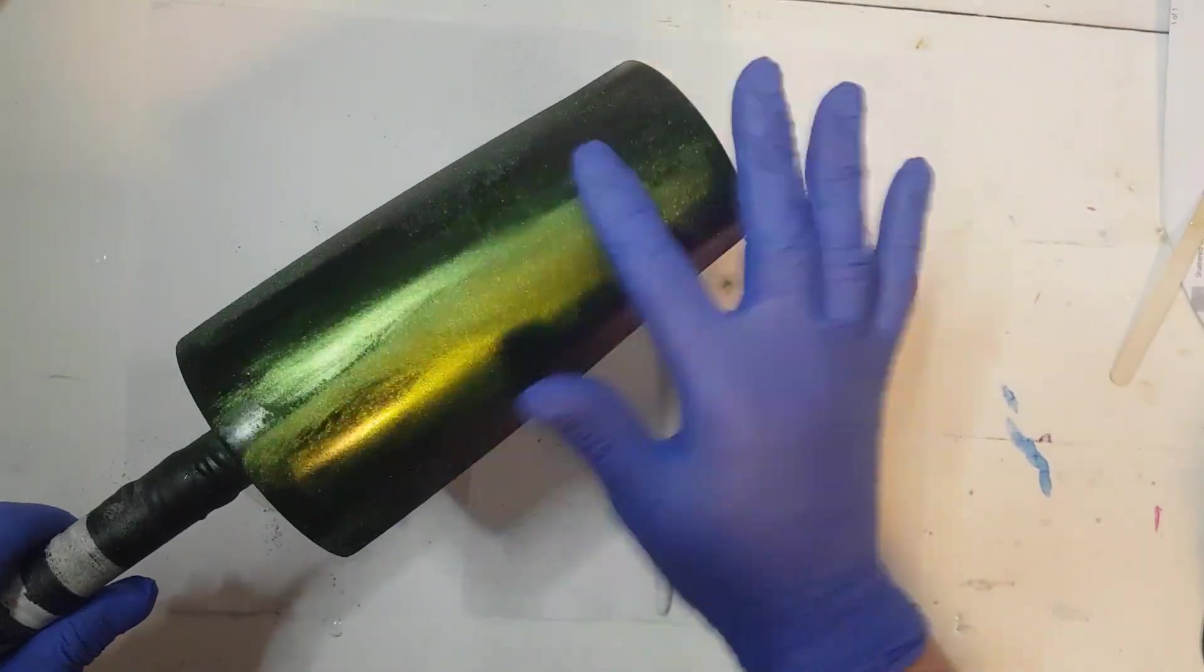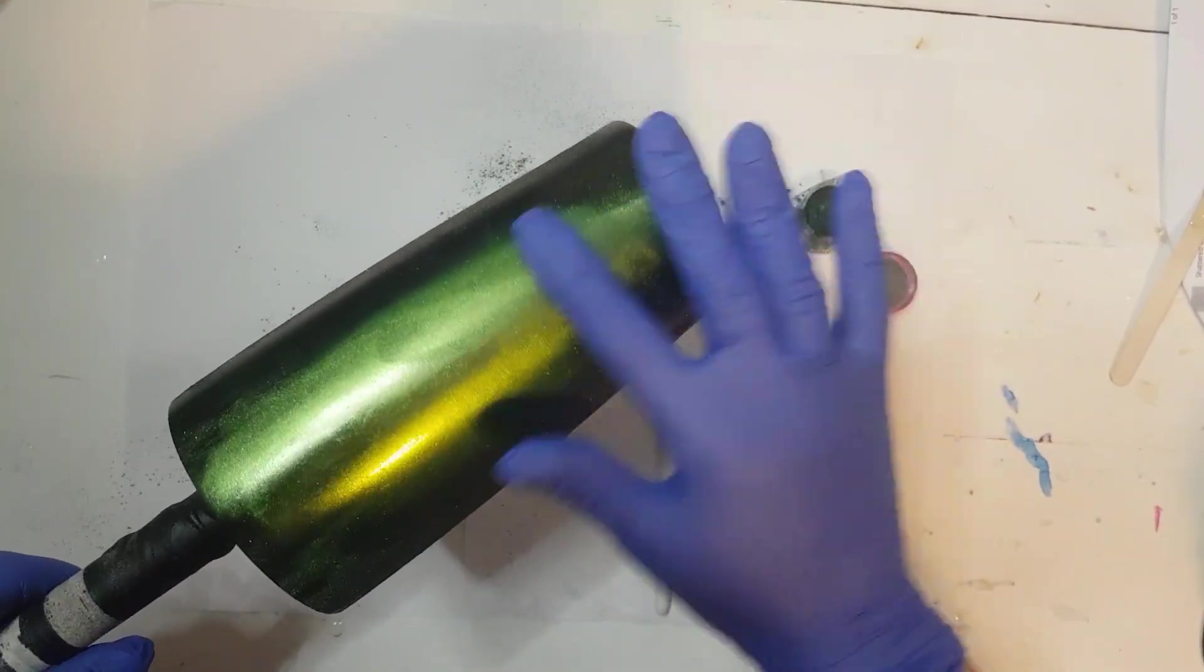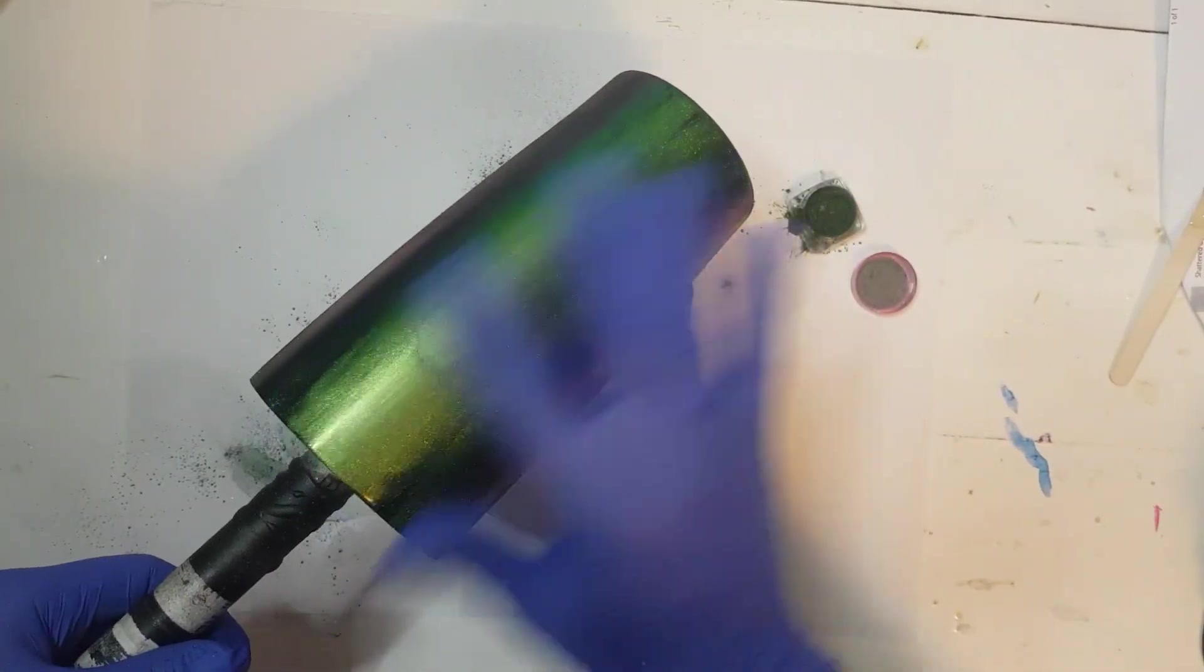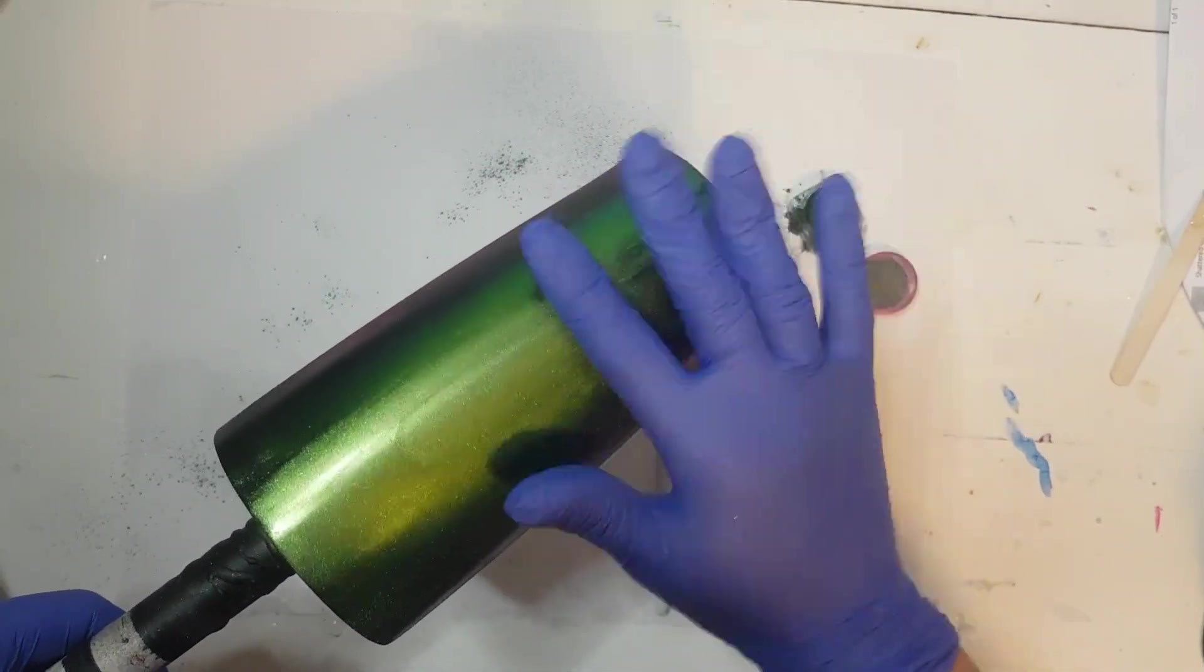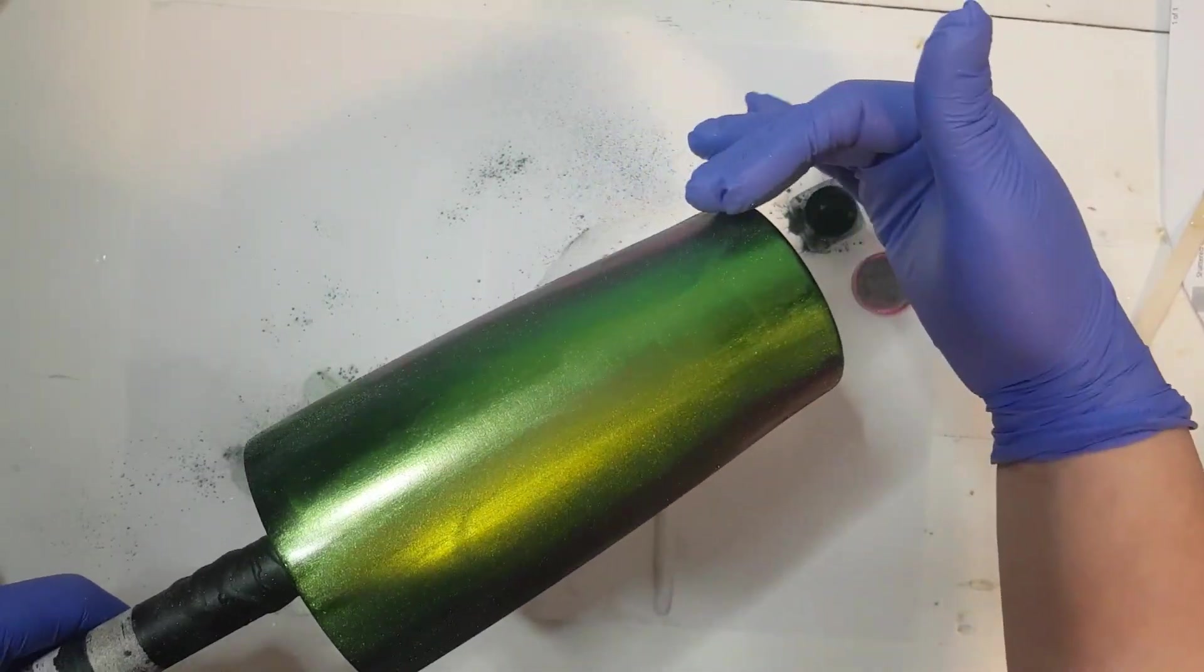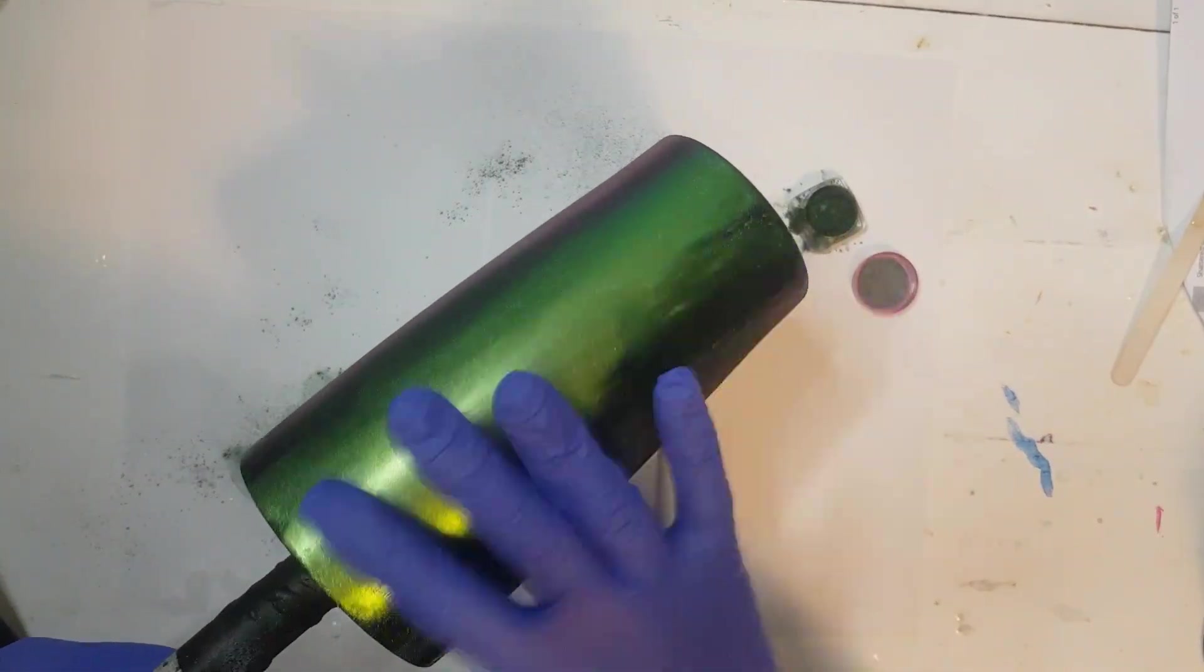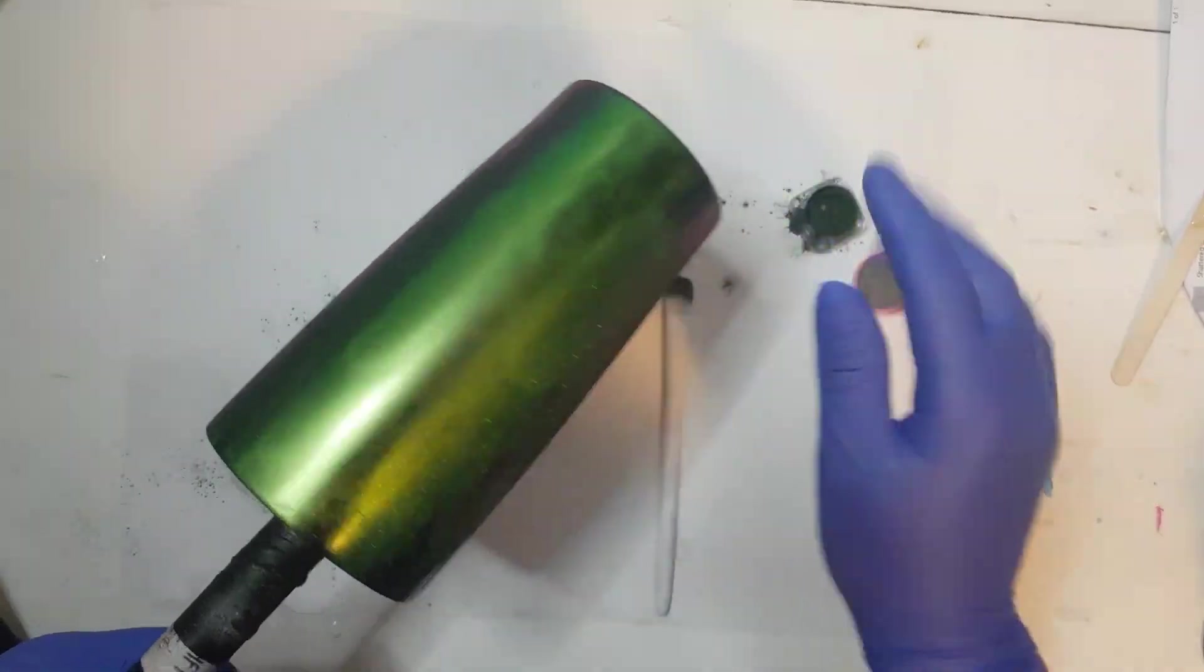I'm going to go ahead in with my hand and rub some of that on. Burnish them down. Hopefully you can see the purple down the side here. Because the way my light is the top is just showing the green currently.